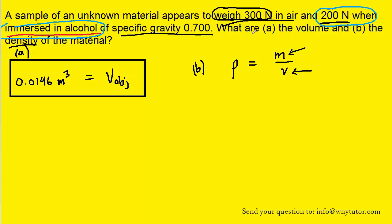All we need to do is find the mass of the object. For that, we're going to use the weight in air of 300 N. Recall that weight equals mass times gravity. So we plug in 300 N and the gravitational constant of 9.8, and we can see that the mass is 30.61 kg.